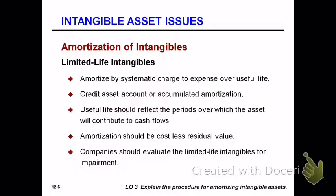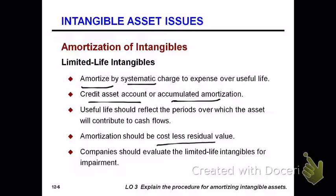How do we amortize intangibles? You have to decide if they're limited life or unlimited life. If they're limited life, amortization is going to be a systematic charge. We're going to usually credit the asset account — you can use an accumulated amortization account if you'd like. We determine a useful life, and the amortizable amount should be cost less residual value, if you intend to sell it at the end. They should also be tested for impairment periodically.